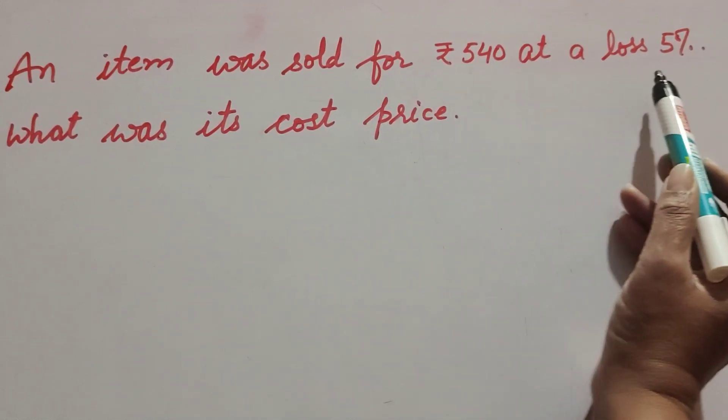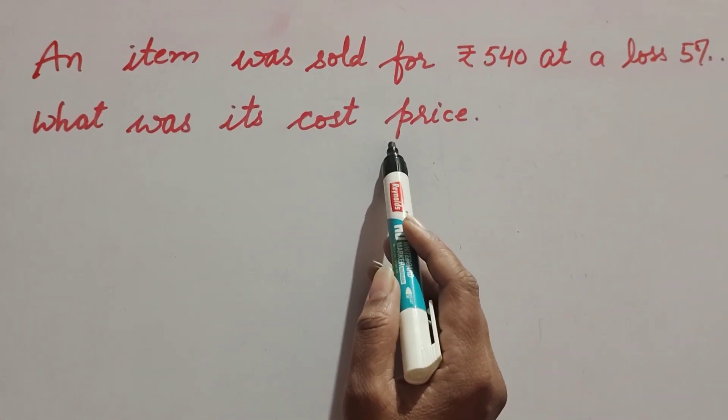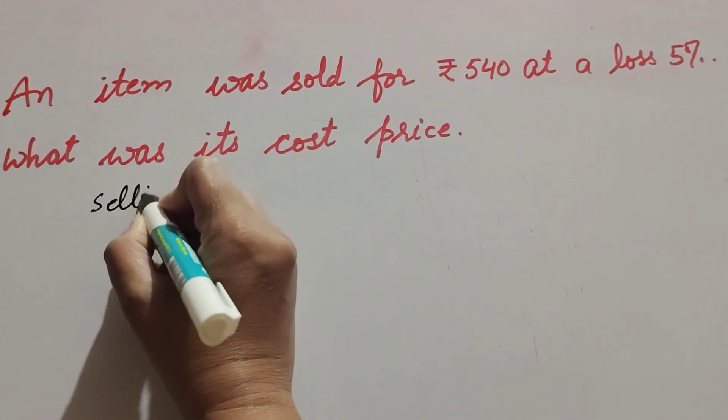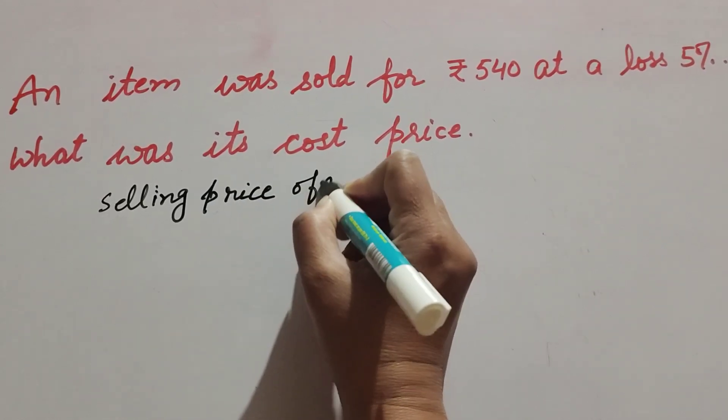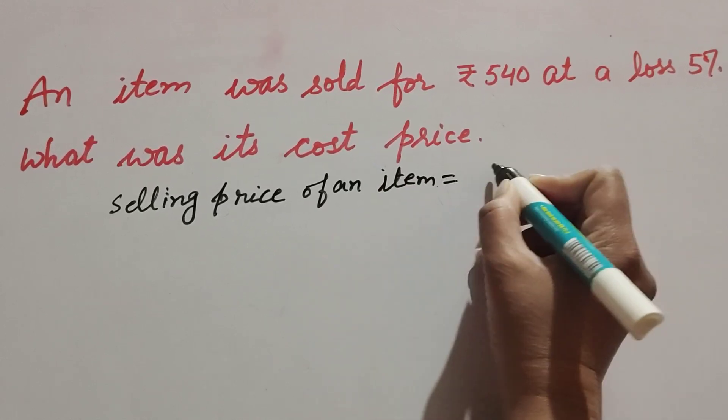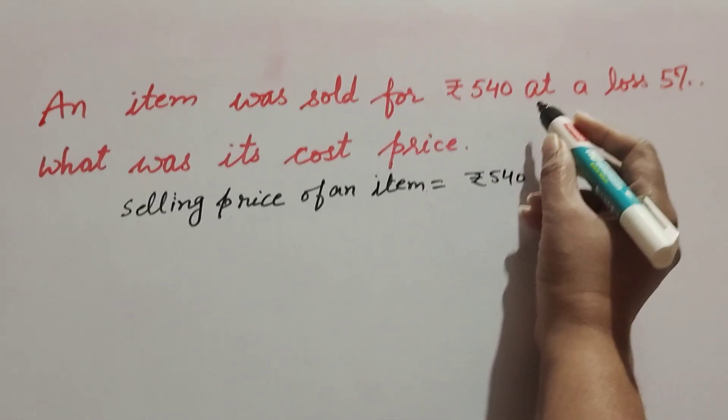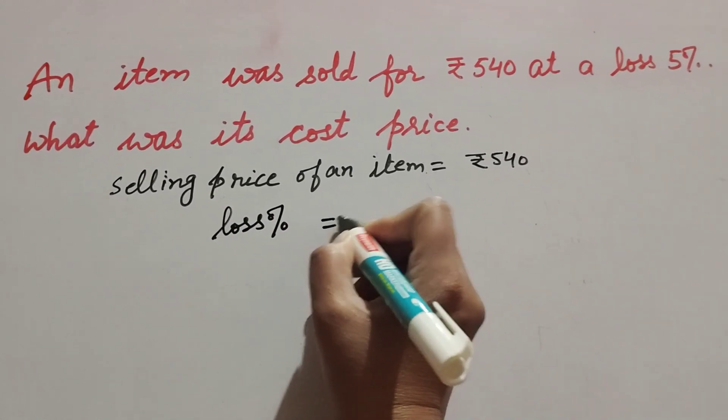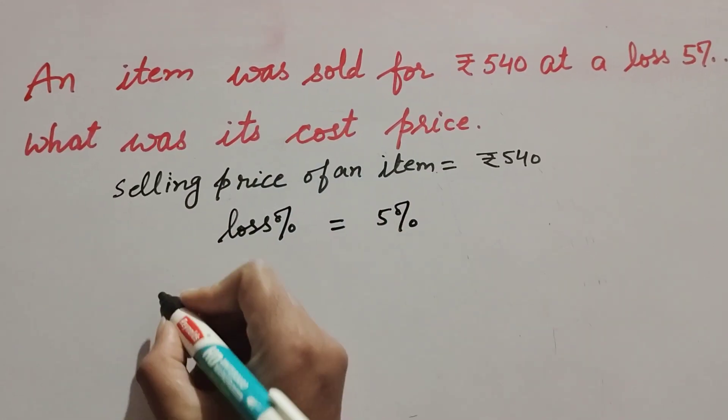Its selling price is given - it is 540, and loss is 5%. We find its cost price. So selling price of an item is given equal to rupees 540, and loss percentage is also given - loss percentage is equal to 5%. We have to find its cost price.